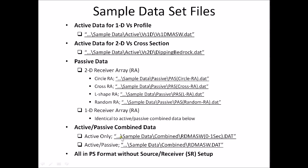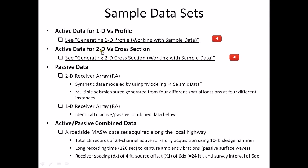This active-passive combined data is real data collected along the local highway. All of these sample datasets are already in PS format without source receiver setup. Active sample datasets to generate 1D and 2D velocity profiles were already demonstrated in two separate video tutorials.